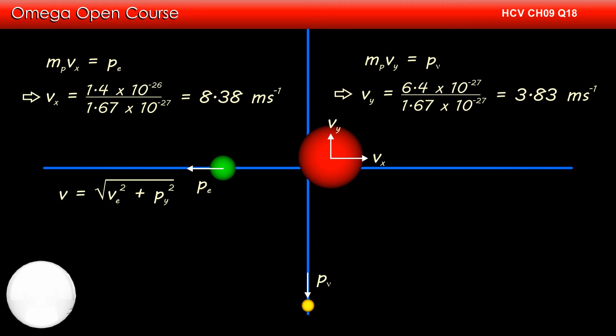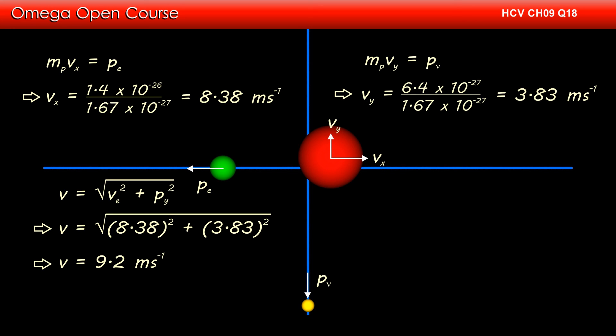The final speed of the proton is the resultant of these two perpendicular velocities, i.e., root of v_x squared plus v_y squared, which implies the speed of proton equals root of 8.38 squared plus 3.83 squared, i.e., 9.2 meters per second. This is the answer to part B of the question.